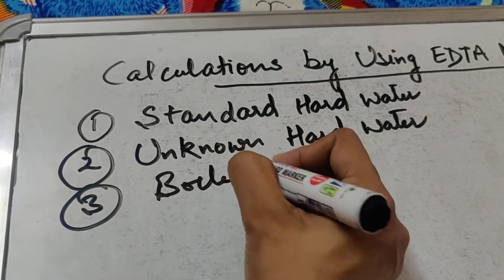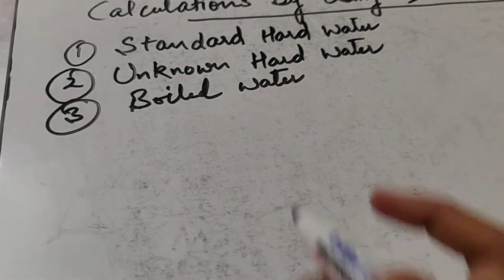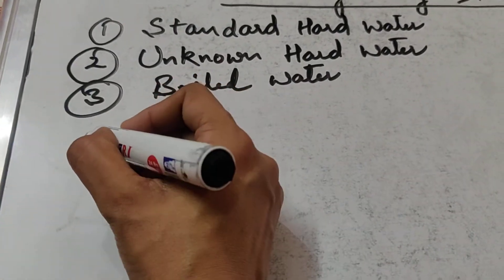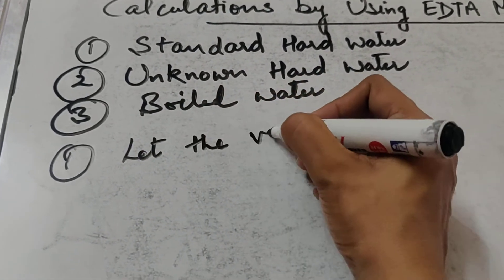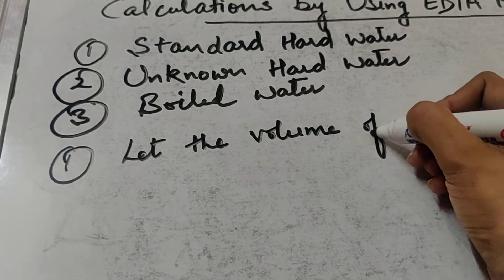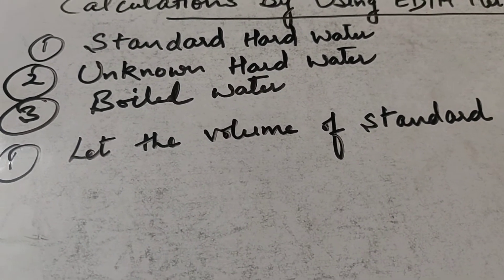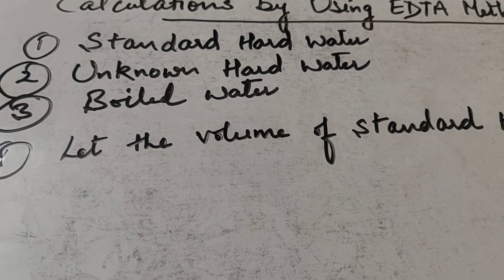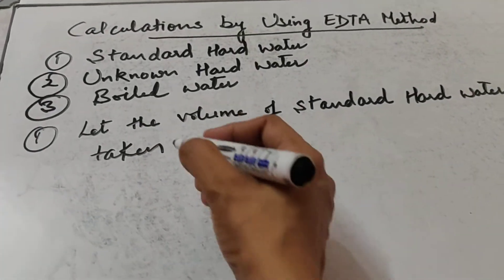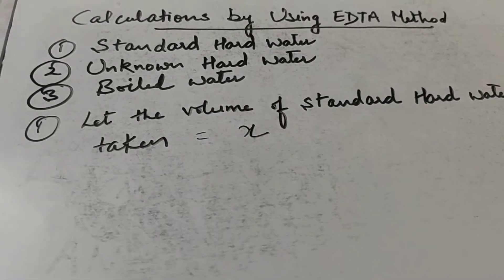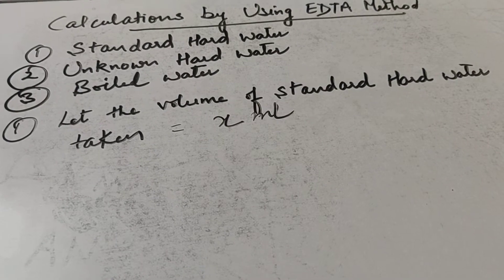We start with the calculations. In the first step — standardization — let the volume of standard hard water taken be equal to X ml. That may be 10 ml, 20 ml, or 50 ml.